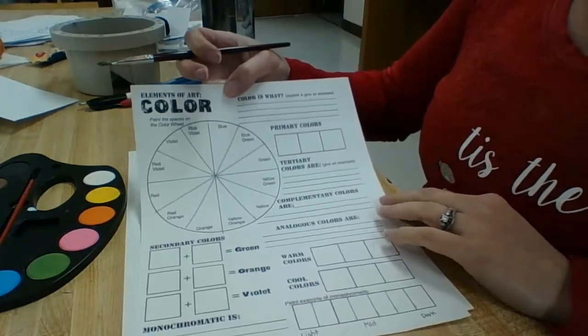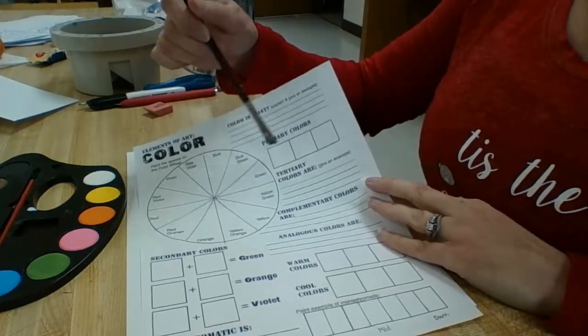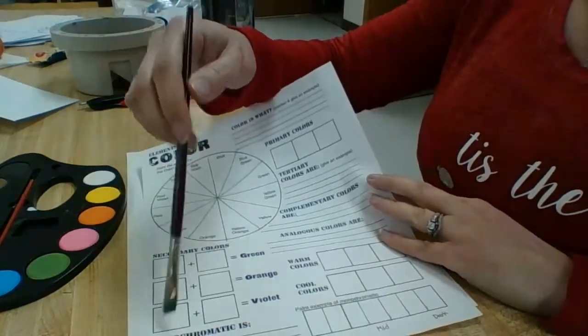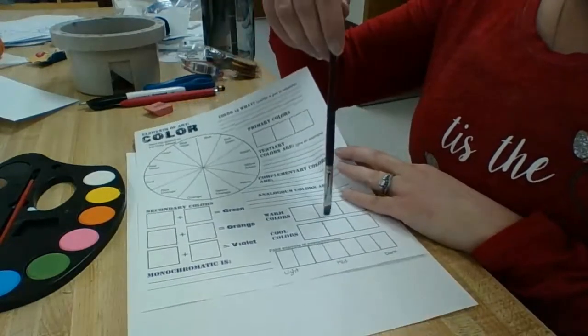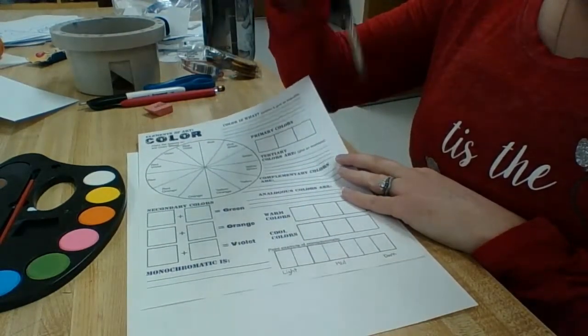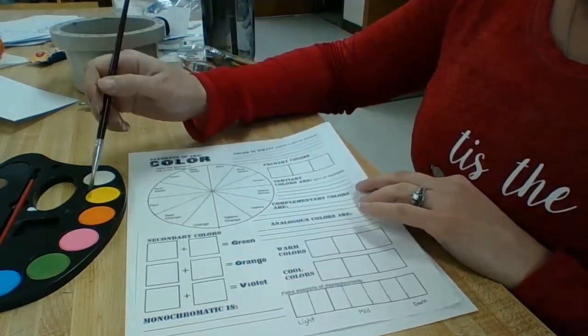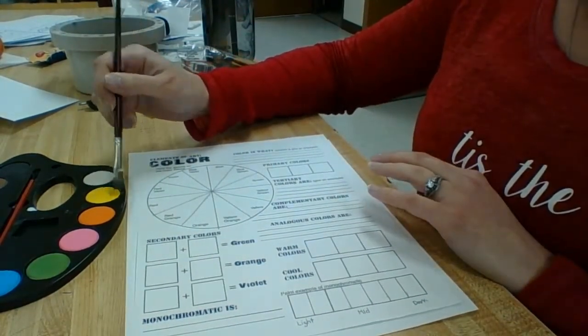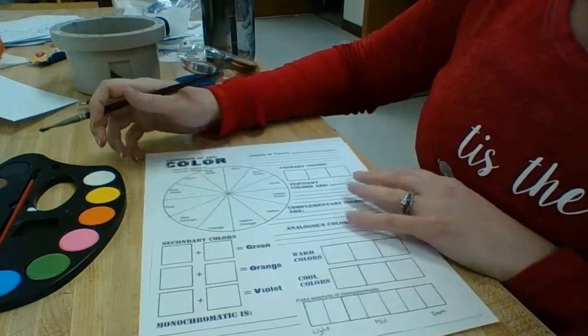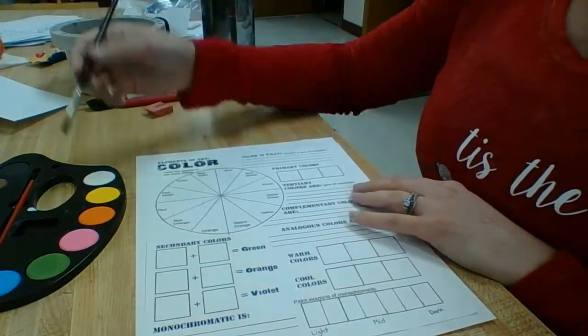You will need to paint and fill in the color wheel here. You will need to fill in all of these boxes. You will also need to fill in the boxes below as well. The paints I gave you only work if they are water activated. So you will definitely need a cup of water.